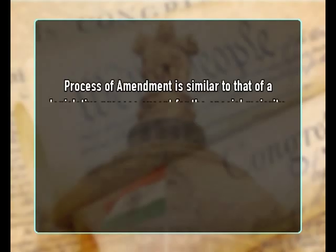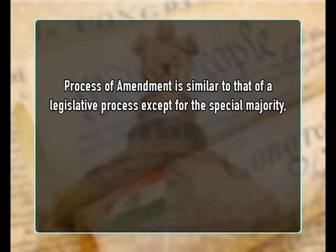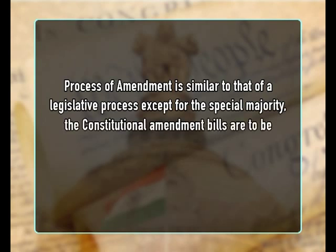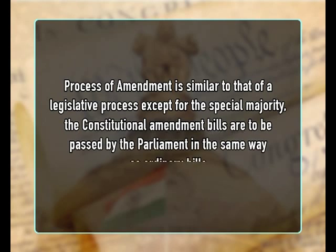The process of amendment is similar to that of the legislative process, except for the special majority. Constitutional amendment bills are to be passed by the parliament in the same way as ordinary bills. There is no provision for holding a joint sitting of both houses of parliament if there is a deadlock over the passage of a constitutional amendment bill. On the other hand, a provision for a joint sitting is made in the case of an ordinary bill.